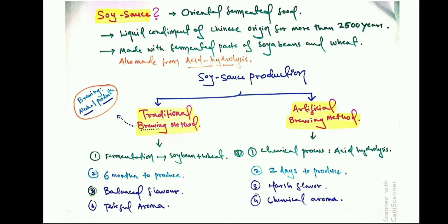Soy sauce is made with fermented paste of soybeans and wheat. It is also made by acid hydrolysis, which is a chemical process used in industrial production. There are two ways to produce soy sauce: one is the traditional brewing method, and the other is the artificial brewing method. The term 'brewing' refers to the method where alcohol production occurs.